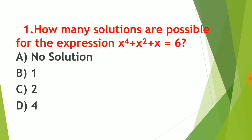Question number one: how many solutions are possible for the expression x to the power 4 plus x squared plus x is equal to 6? For this type of question, we need to see the maximum power of the variable. If the power of the variable is 4, then 4 different values of x are possible. The values of x are called solutions. So the correct answer choice is D — we will get 4 solutions from question number one.